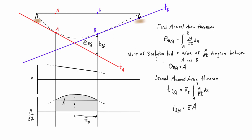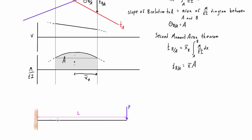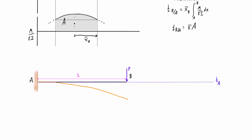When we come to a problem like a cantilever beam, we think carefully about where to place A and B. These problems typically ask for the slope and deflection at the free end when a load is applied. We get a deflected shape bending down toward the free end, but at the fixed rigid connection the beam stays undeformed — it comes out horizontal at zero degrees. So we call the fixed end point A and the free end point B. The tangent at A is a horizontal line, and the tangent at B slopes downward.